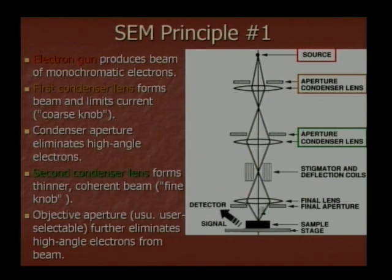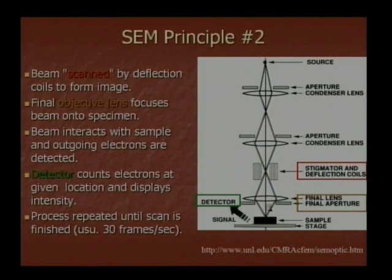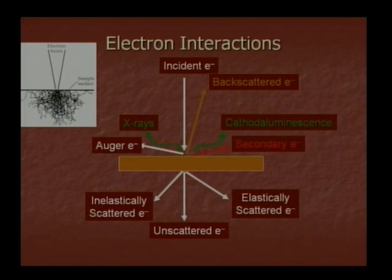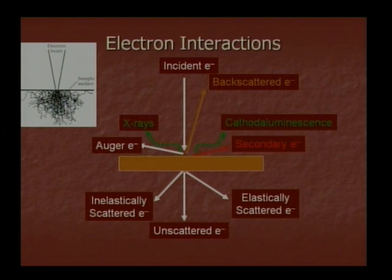The SEM process: beam scan, objective lens, detector. Deflection, final lens, detector — image processing repeated until scan finished, usually at 30 frames per second. Electron interactions: electron-surface interactions — unscattered electrons, elastically scattered electrons, inelastically scattered electrons, X-rays, secondary electrons, backscatter electrons.